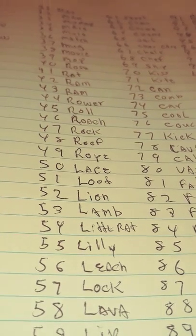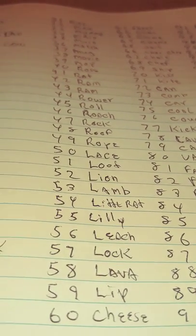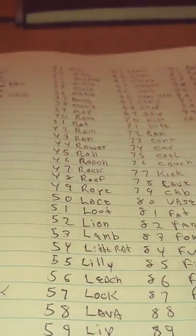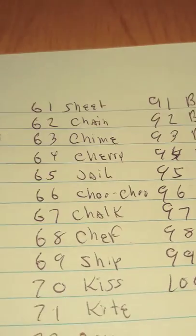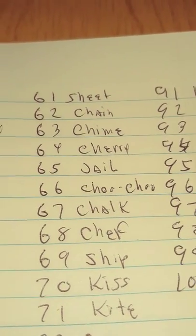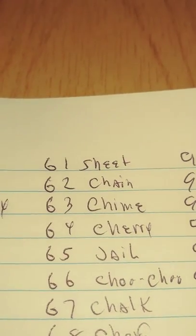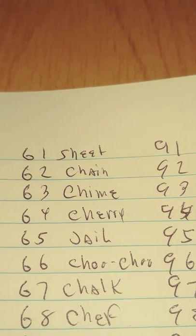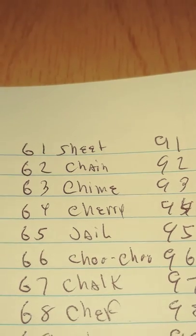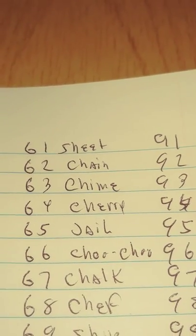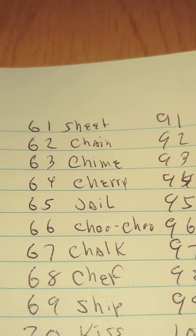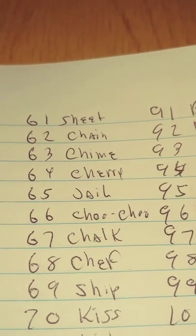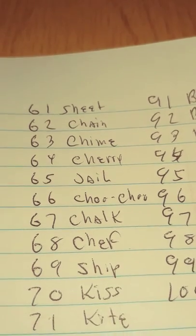Moving on, lily is 55, leech is 56, lock is 57, lava is 58, lip is 59, and cheese is 60. We've got 61 is sheet, 62 is chain, 63 is chime, 64 is cherry, 65 is jail, 66 is choo-choo, 67 is chalk, 68 is chief, 69 is ship.